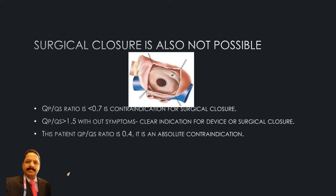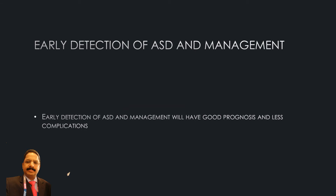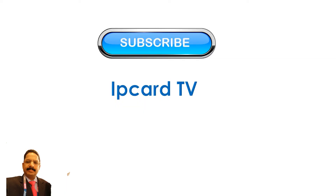Early detection and management is a crucial key point in the management of atrial septal defect. In cases of severe pulmonary hypertension and right-to-left shunt, the patient's life and quality of life will definitely be compromised. Therefore, early diagnosis and treatment of ASD is very important. Thank you very much for watching Epcot TV — please subscribe and share this video.